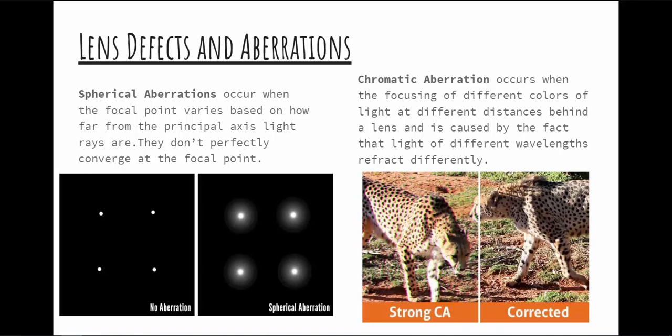Chromatic aberration is another focusing problem, caused by the fact that the light we see contains all different wavelengths. They won't all exactly focus in the same spot because of refraction — how much a wave bends depends on its wavelength. Because they're all different colors, they all have different wavelengths. Again, we can fix this by blocking the edge of the lens.